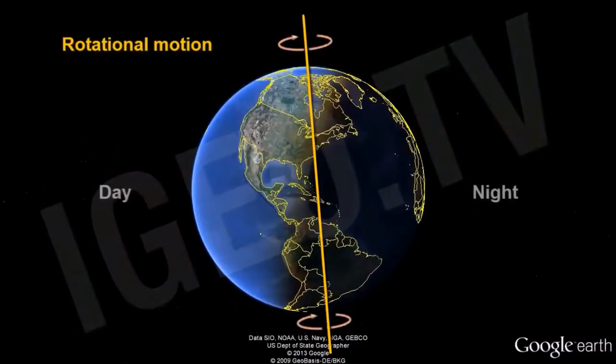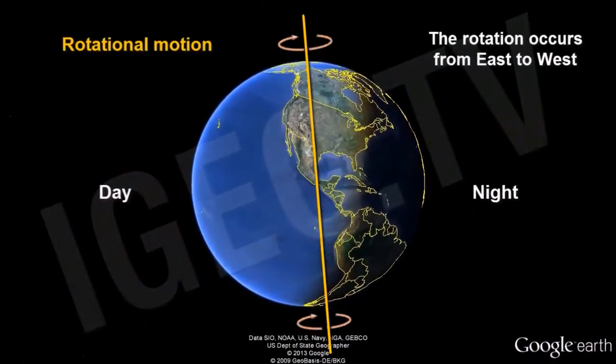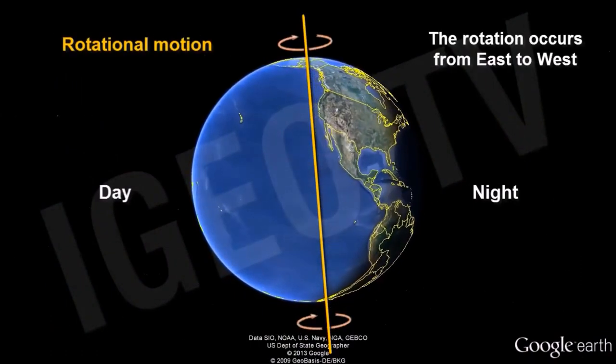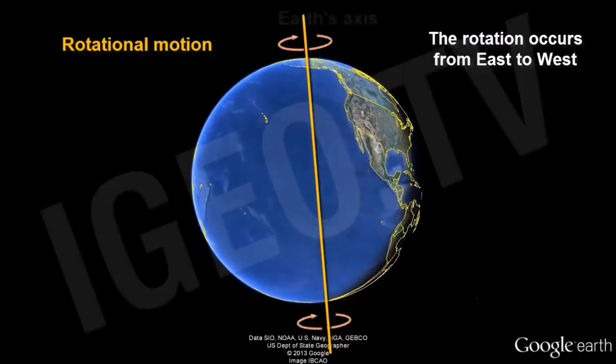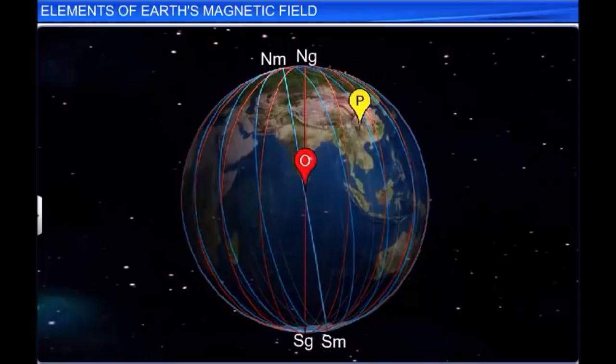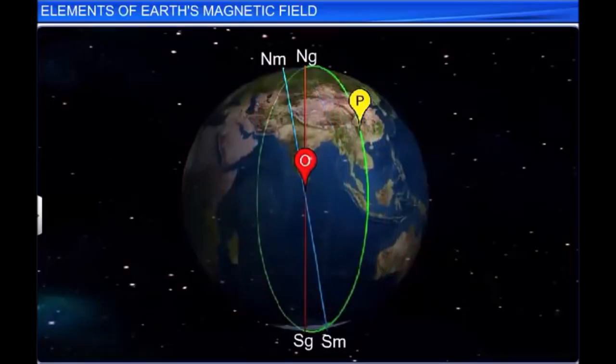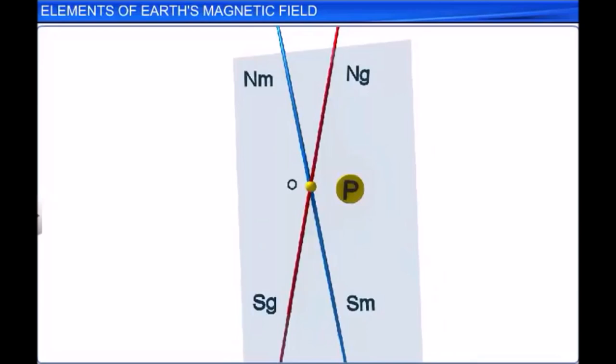The magnetic axis and the geographical axis do not coincide with each other. The magnetic axis of the Earth is inclined at an angle of above 10 degrees to 15 degrees with the geographical axis.